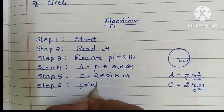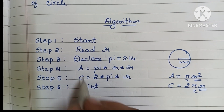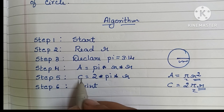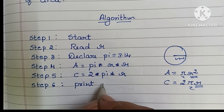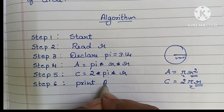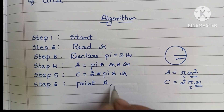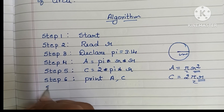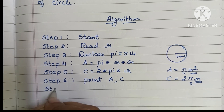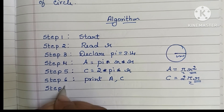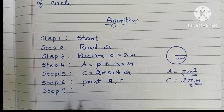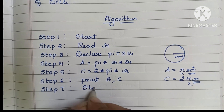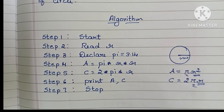In Step 6, we have to print the output values. So write print A comma C — that is the area of the circle and the circumference of the circle. In Step 7, we have to stop the algorithm using the stop statement.